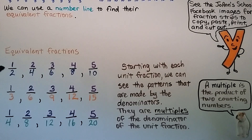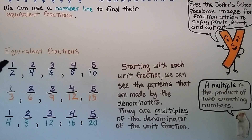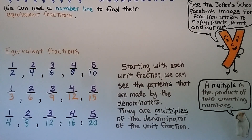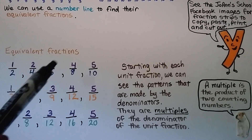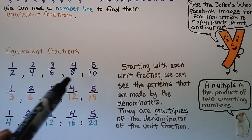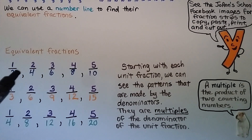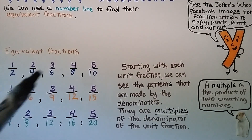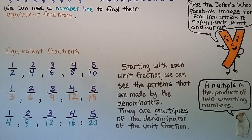Here we have some equivalent fractions starting with each unit fraction — remember, that means the numerator is a one. We can see the patterns made by the denominators; they are multiples of the denominators of the unit fraction. One-half is equivalent to two-fourths, which is equivalent to three-sixths, four-eighths, five-tenths. The numerators go one, two, three, four, five — up by one in order. But the denominators go two, four, six, eight, ten. When we have two for the numerator, we do two times two, which is four. When we have three for the numerator, we do two times three, which is six. See that pattern?